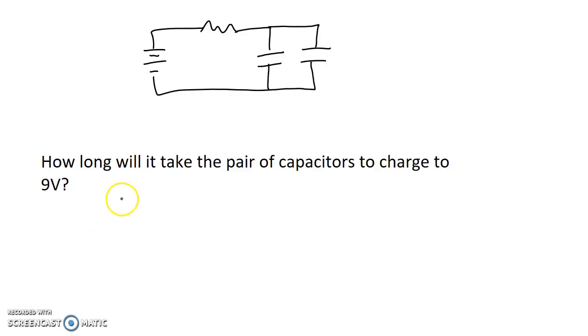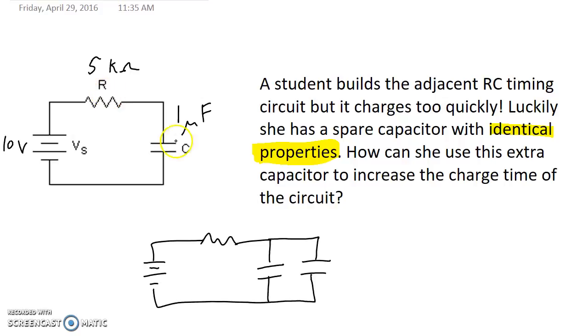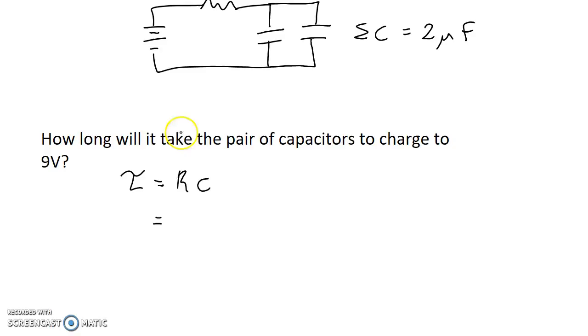To answer this question, the first thing we need to find is the time constant for this circuit, which is the resistance times the capacitance of the RC circuit. The question has a 5 kiloohm resistor and the first capacitor is 1 microfarad, which means that the net capacitance of this system is 2 microfarads, or the sum of the two capacitors. So overall the time constant is going to be 5 kiloohms times 2 microfarads, or 10 milliseconds.